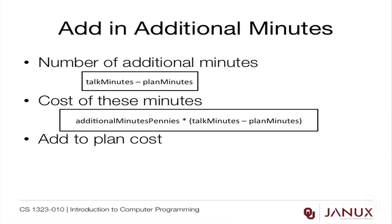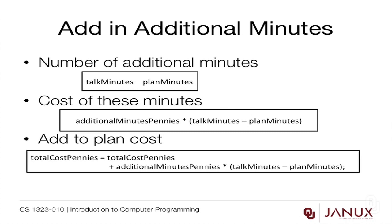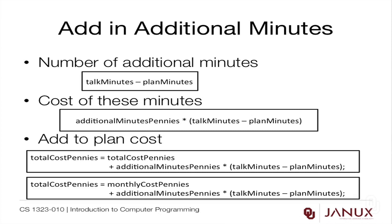Now let's add to the plan cost. There are two different ways to do it. We can say: total_cost_pennies = total_cost_pennies + additional_minutes_pennies * (talk_minutes - plan_minutes). Or we can say: total_cost_pennies = monthly_cost_pennies + additional_minutes_pennies * (talk_minutes - plan_minutes). In programming there are often many ways to do things and neither is necessarily wrong. I'd probably pick the second way because it doesn't depend on total_cost_pennies having been initialized correctly.